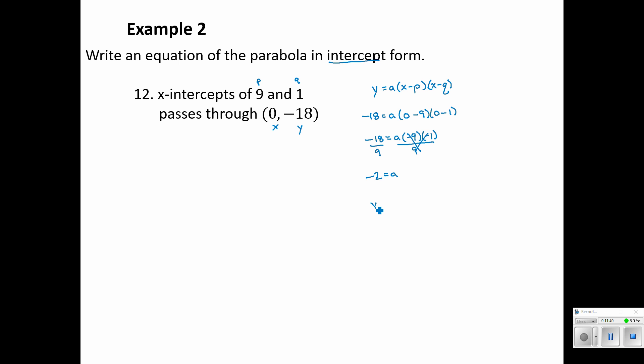So I know my equation is y equals negative 2 times (x minus 9) times (x minus 1). And it's in intercept form. If we wanted to put it into standard form, we would foil these together and combine like terms.